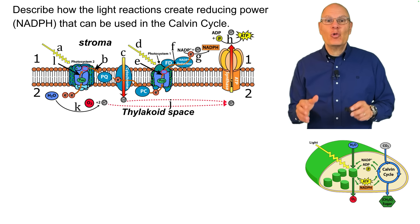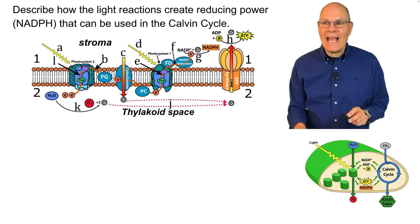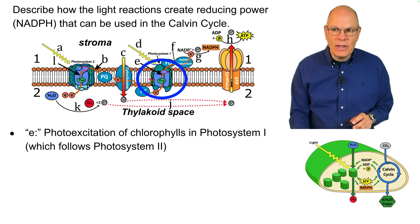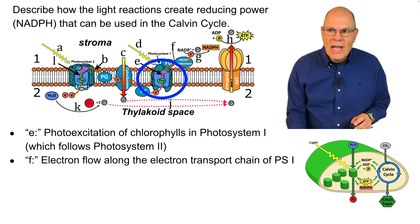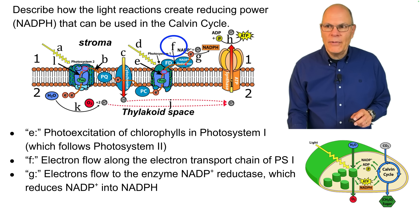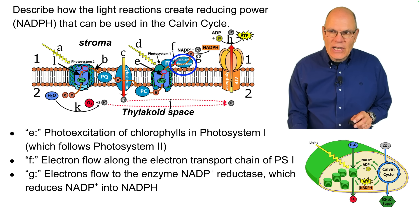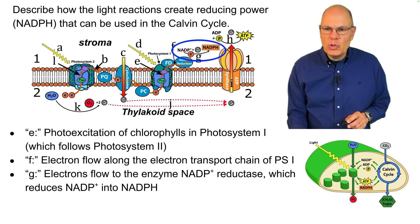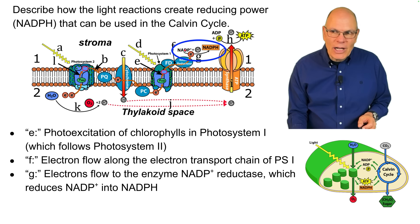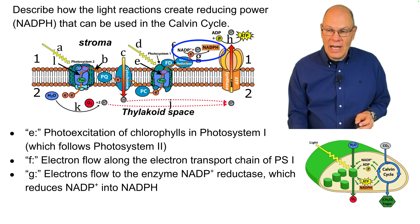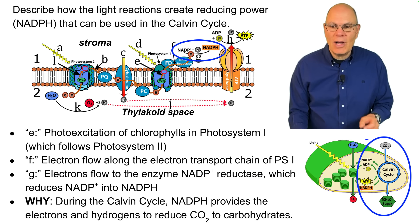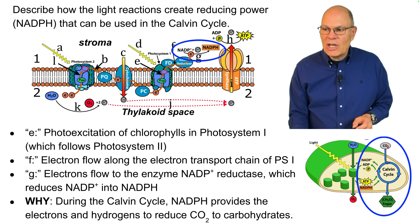Describe how the light reactions create reducing power — NADPH — that can be used in the Calvin cycle. Photo-excitation of chlorophylls in photosystem I creates a flow of electrons through photosystem I's electron transport chain. Those electrons flow to the enzyme NADP⁺ reductase, which reduces NADP⁺ into NADPH — reduction being gain of electrons. NADP⁺ gains electrons and hydrogen, making it NADPH. During the Calvin cycle, that NADPH provides the electrons and hydrogens that reduce carbon dioxide into carbohydrates.